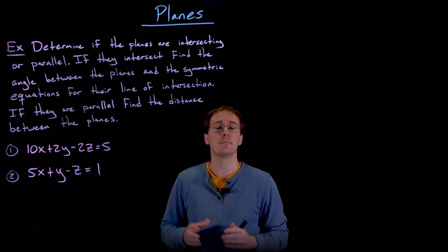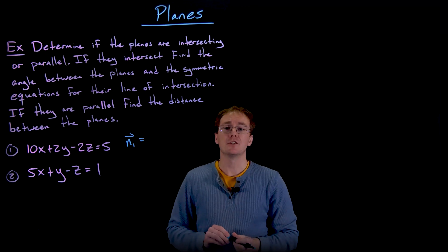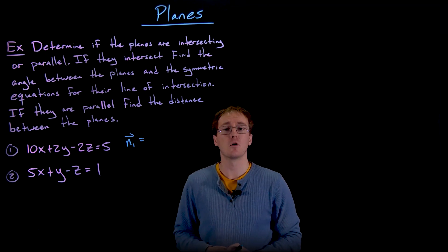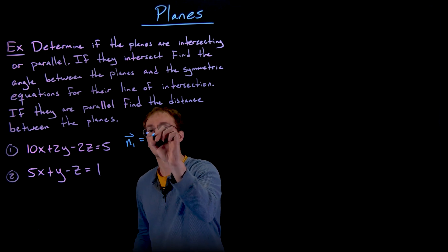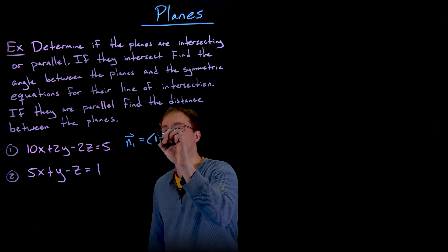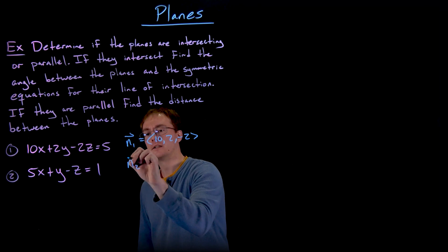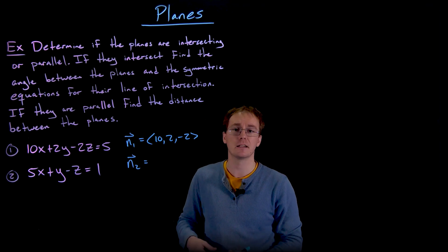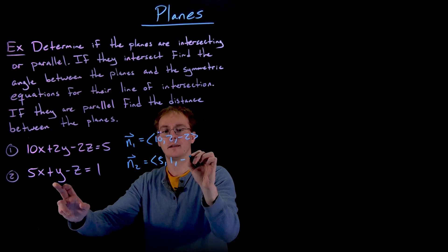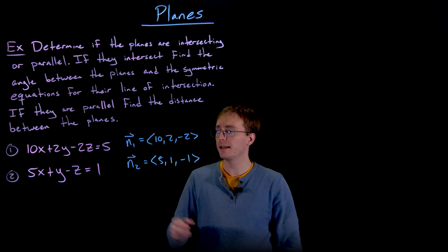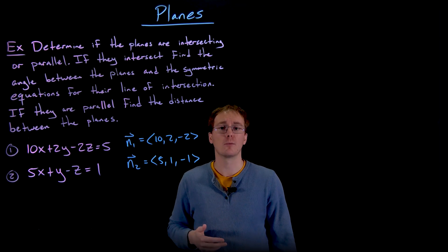The first thing we have to determine is if the planes are intersecting or if they are parallel, and the way we do this is by comparing their normal vectors. When we have the scalar equation of a plane, it's very easy to identify the normal vector — it's just the coefficients in front of x, y, and z. So our first plane has a normal vector n1 with components of 10, 2, and negative 2. Our second plane's normal vector n2 has components of 5, 1, and negative 1. We can notice right away that n2 is just half of n1.